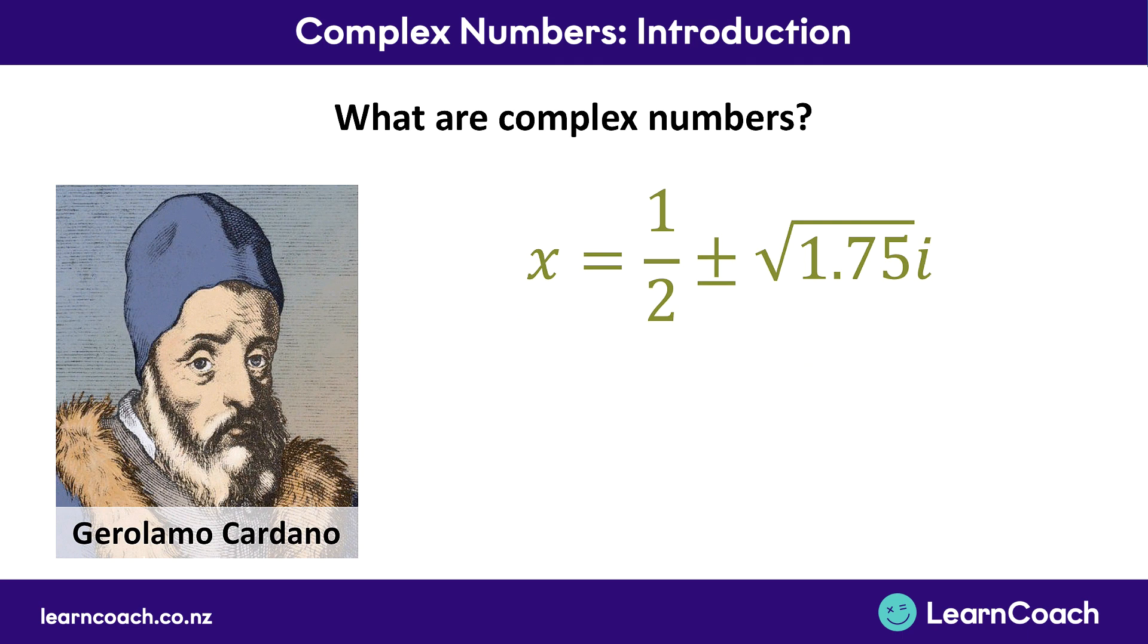Now the first thing we're going to do is just simplify it so it's easier to look at. One half is the same as saying 0.5, and the square root of 1.75 if you put it in your calculator is the same as saying 1.33. So we're just going to write that in purely because it's easier to look at.